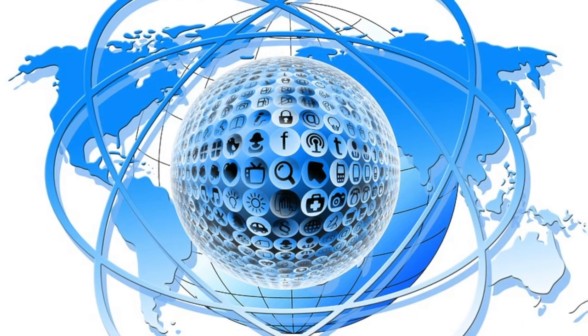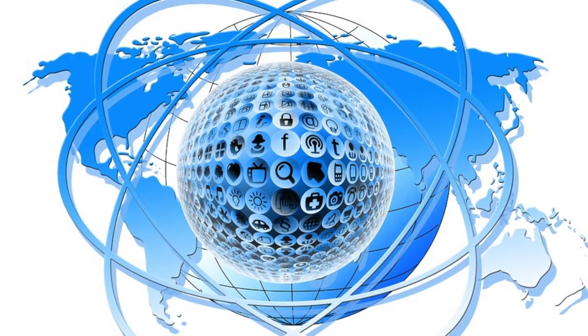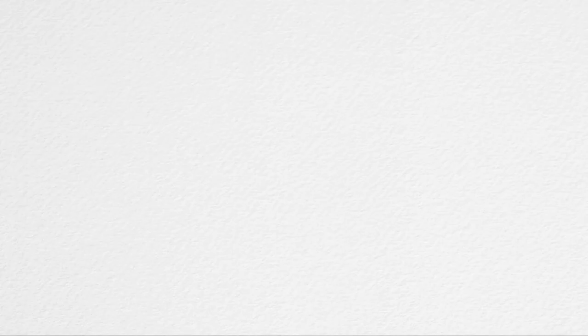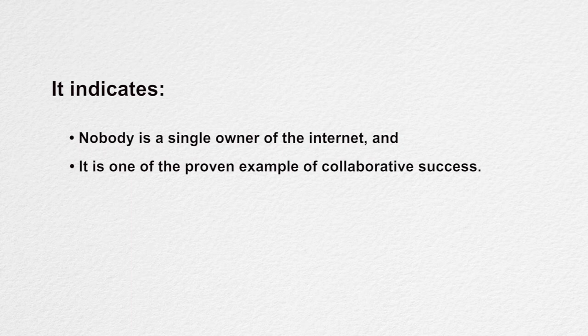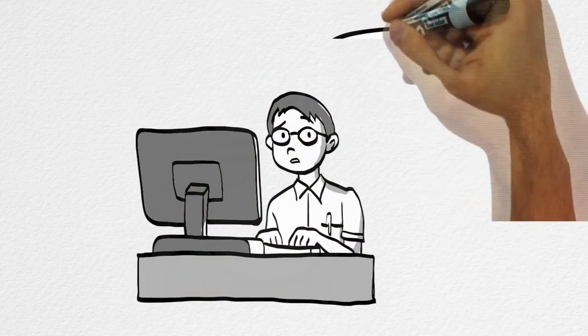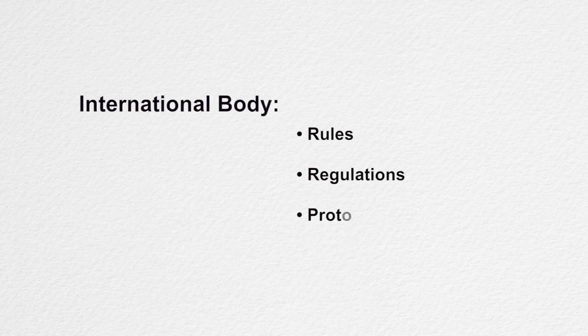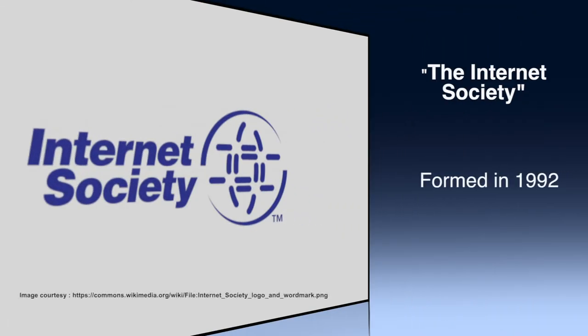The internet, as the name suggests, is a network of networks — a collection of several small, medium, and large networks. This clearly indicates that nobody is a single owner of the internet, and it is one of the proven examples of collaborative success. You must be surprised how such a large network spread across continents can run without any problem. To monitor such a large network, we require an international body which can frame the rules, regulations, and protocols to join and use this network. Therefore, an international organization known as the Internet Society was formed in 1992 to take care of such issues.